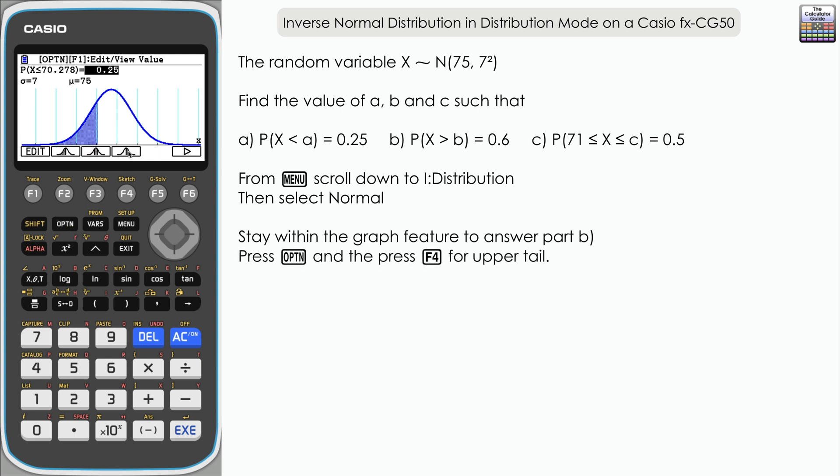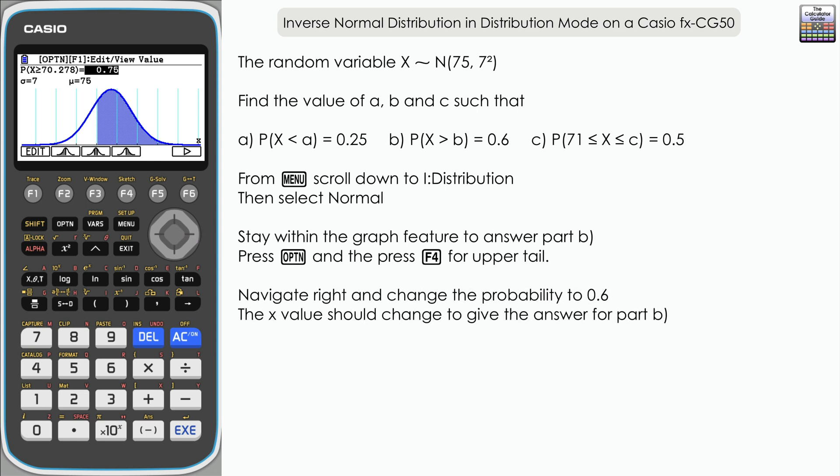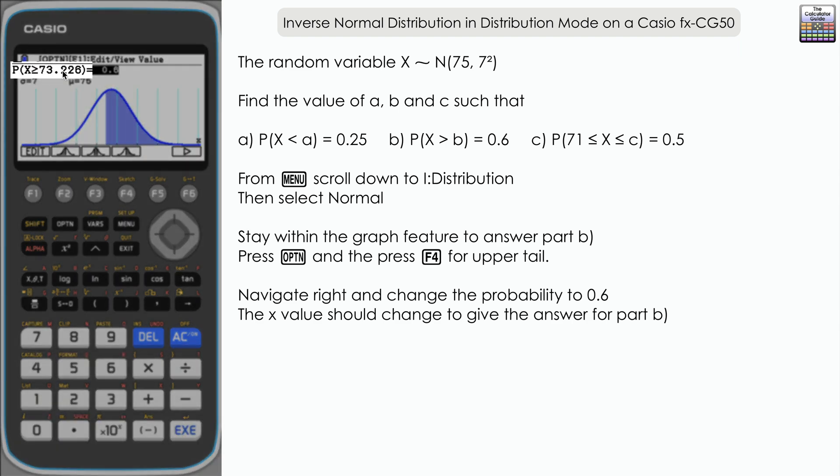What's happened currently is we've just switched direction, but we still have the X value from part a in. We're going to change this by changing the probability, so we need to alter the probability value to 0.6 and press execute. And you can see here that the X value has changed. This time now it's 73.226, so that is the value for B.